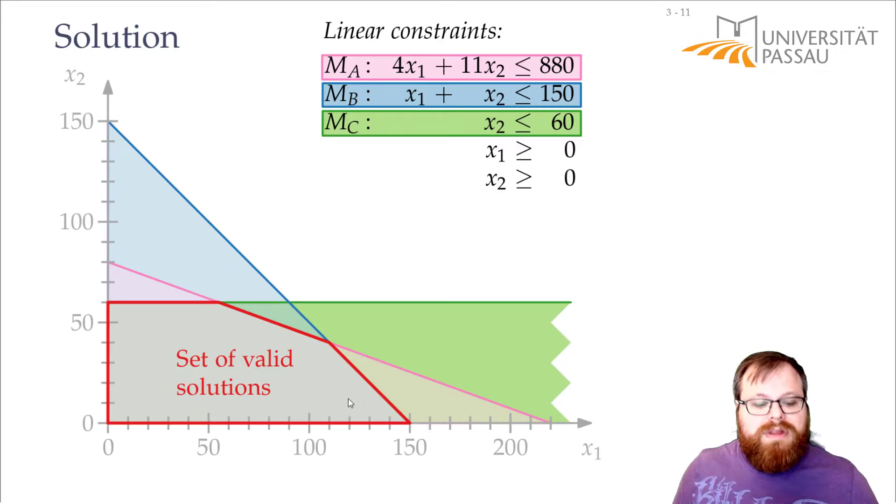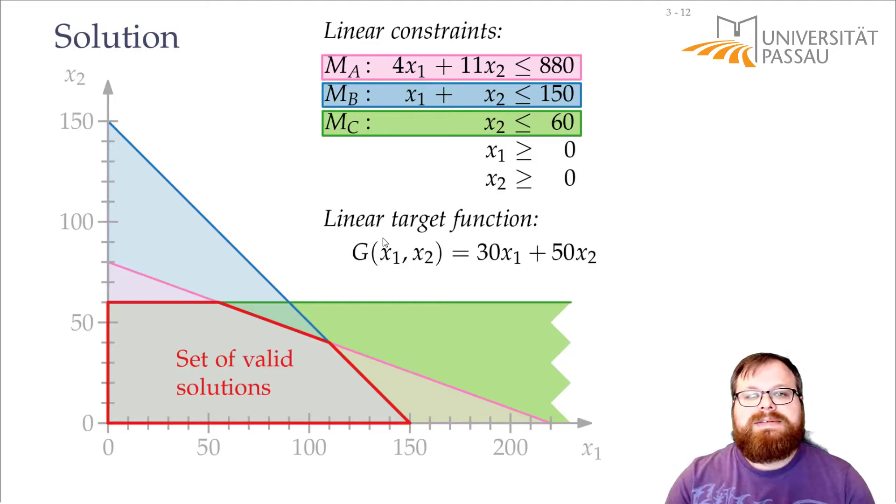And every point in here gives us a valid solution. Everything what we put here, this point that we can do. We can do 120 keyboards and 50 mice. But which of those solutions do we want to pick?